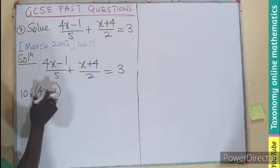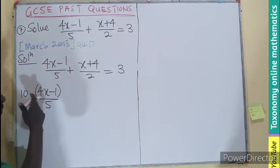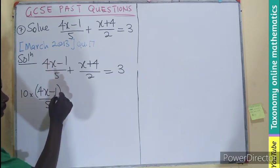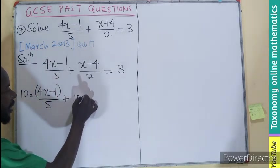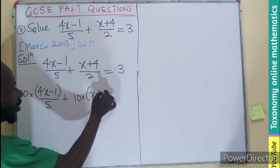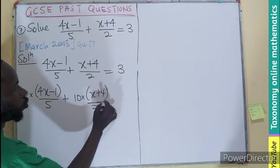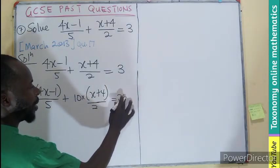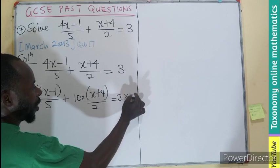The 10 affects both terms in the numerator. Plus 10 times into bracket x plus 4 divided by 2 equals 3 times 10, which would be 30.